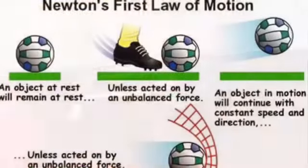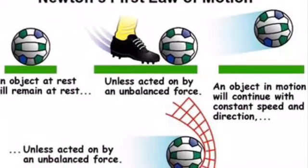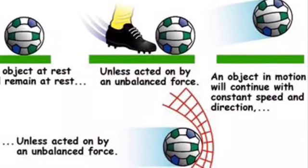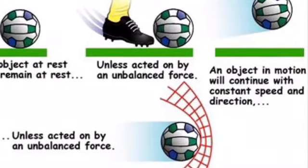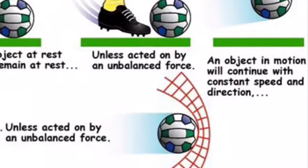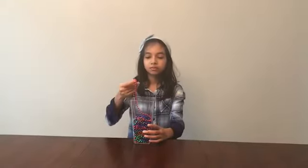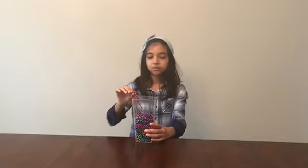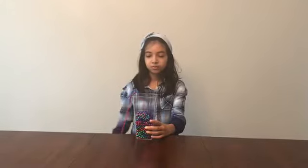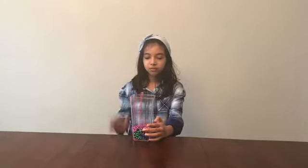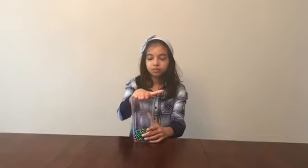We shall start with the first law. The first law states that an object at rest will stay at rest, and an object in motion will keep moving unless an external force acts upon it. Let me demonstrate. We have inertia beads kept inside a container. If I tug the string and let go, it will keep moving unless an external force like me blocks it.